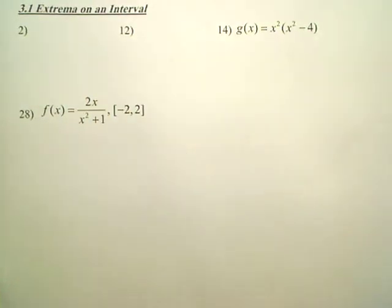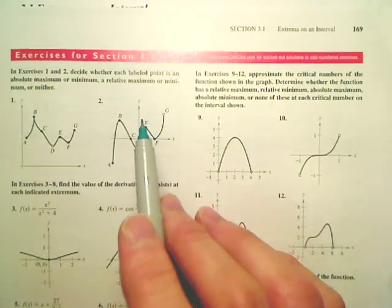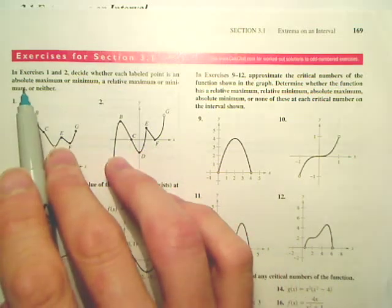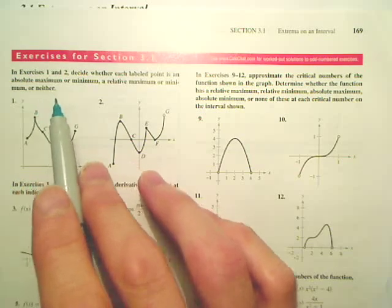We're going to do problems 2 and 12. Number 2 here says, decide whether each labeled point is an absolute maximum or minimum, a relative maximum or minimum, or neither.